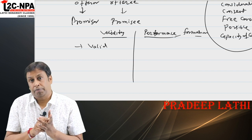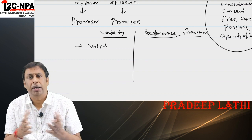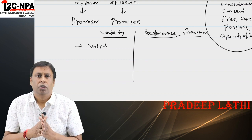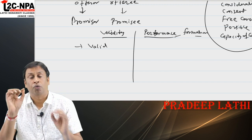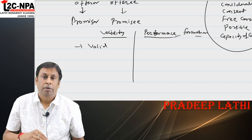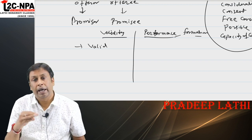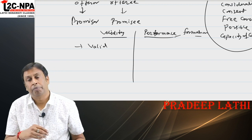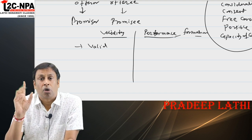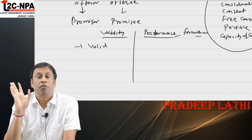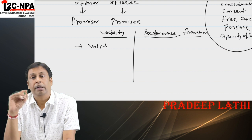Void agreement — void ab initio, void from the beginning. Agreements involving a minor, impossible acts, or illegal purposes are void agreements. Void agreements are those which are void from the beginning and have never made a contract.